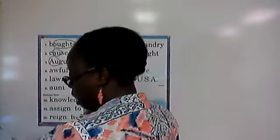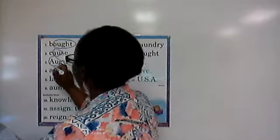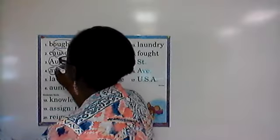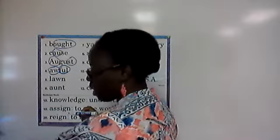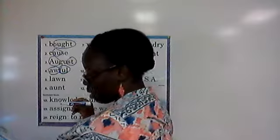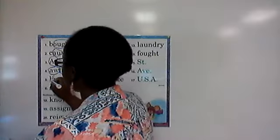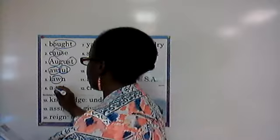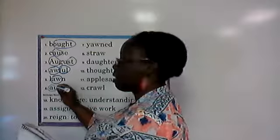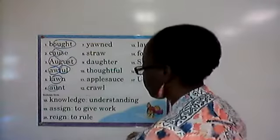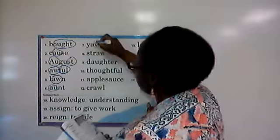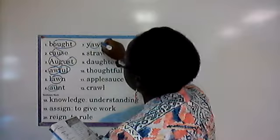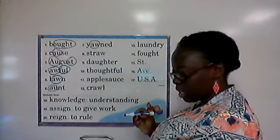In the word awful, we have 'aw' as in saw: A-W, and 'ful' as in beautiful: F-U-L. In the word lawn, we have 'aw' as in saw again: A-W. In aunt, we have 'au' as in faucet: A-U. In yawned, we have 'aw' as in saw: A-W, and also 'ed' as in played: E-D.